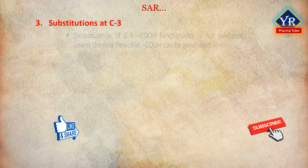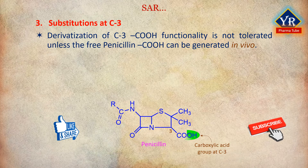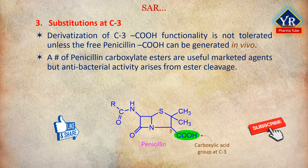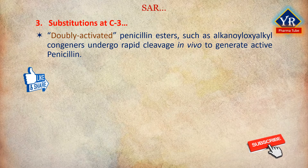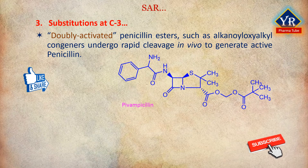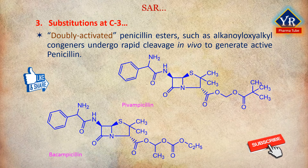Number 3: Substitutions at C3. In general, derivatization of the C3 carboxylic acid functionality is not tolerated unless the free penicillin carboxylic acid can be generated in vivo. A number of penicillin carboxylate esters are useful marketed agents, but antibacterial activity is attributed to the parent penicillin that arises from ester cleavage. Simple alkyl and aryl penicillin esters are cleaved slowly and are not useful products. However, doubly activated penicillin esters such as alkanoyloxy-alkyl congeners undergo rapid cleavage in vivo to generate active penicillin. Most of these products are derived from ampicillin — pivampicillin and becampicillin are examples, although ester products of mecillinam and other compounds are also available.